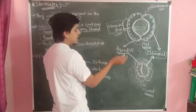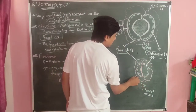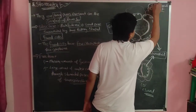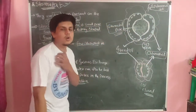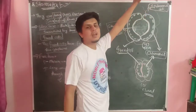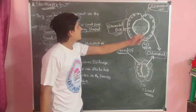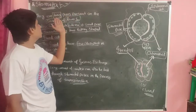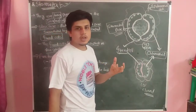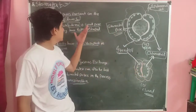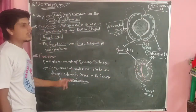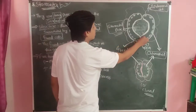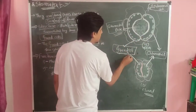The surrounding cells are present on the surface of leaves. We have tiny pores present on the surface of leaves. The stoma is a small pore surrounded by two kidney-shaped guard cells.